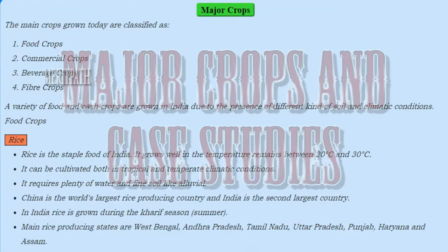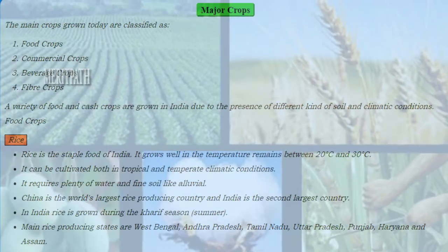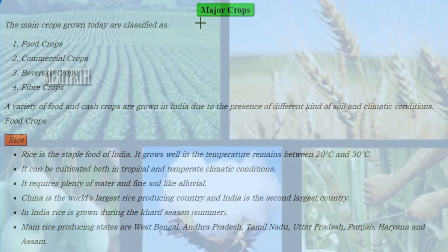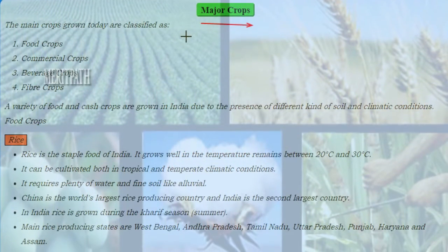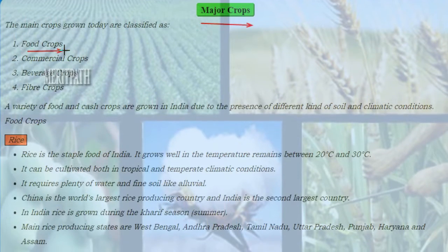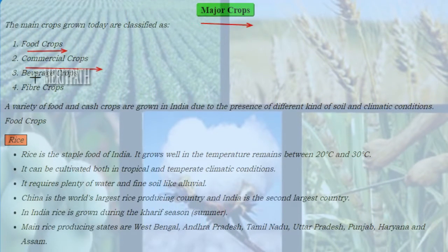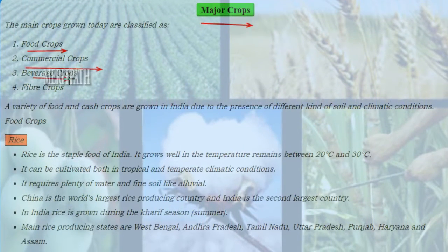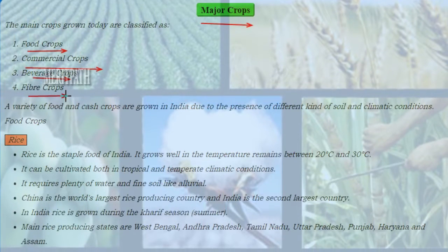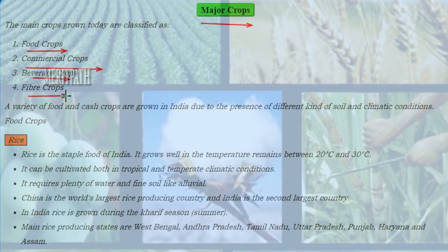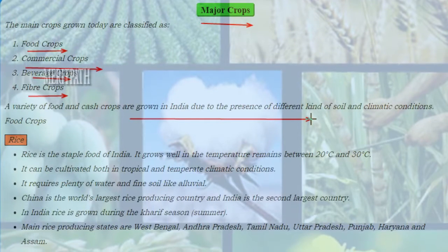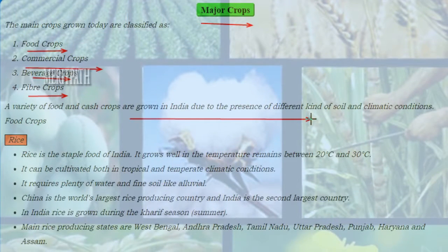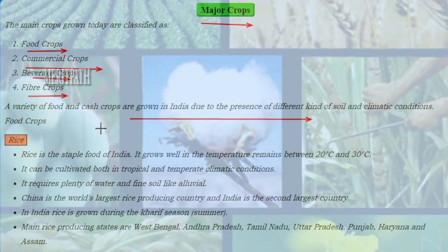Hi friends, today we shall discuss about major crops and case studies. The main crops that are grown today are Food Crops, Commercial Crops, Beverage Crops, and Fiber Crops. A variety of food crops and cash crops are grown in India due to the presence of different kinds of soil and climatic conditions. Let us learn about food crops.